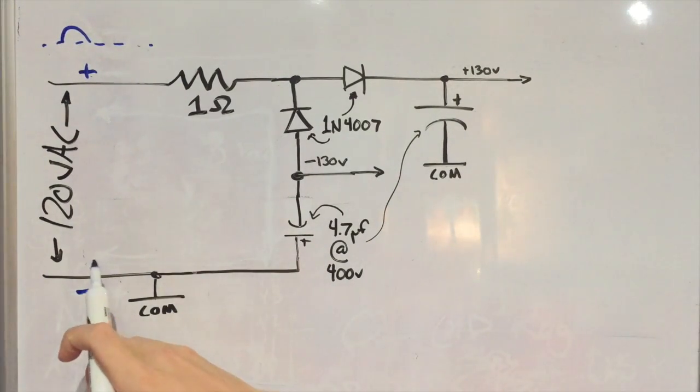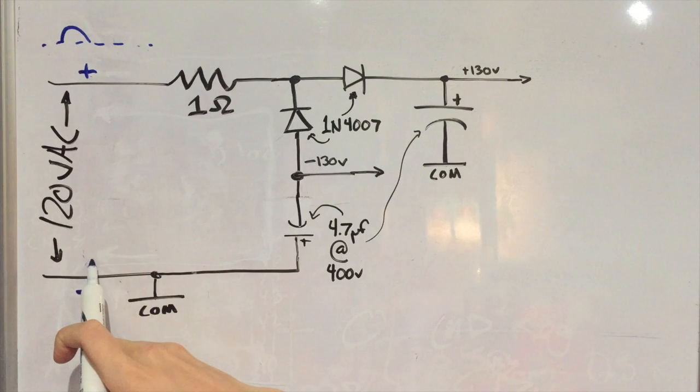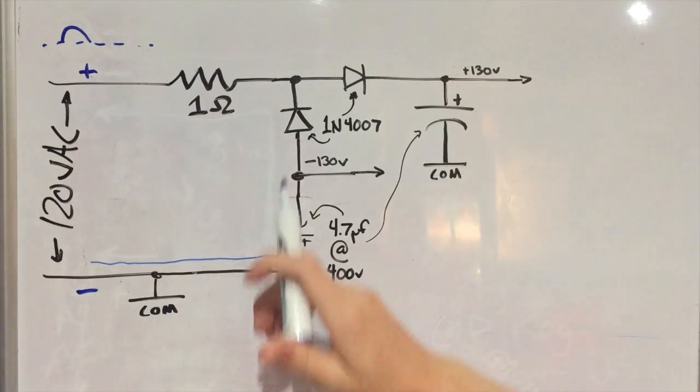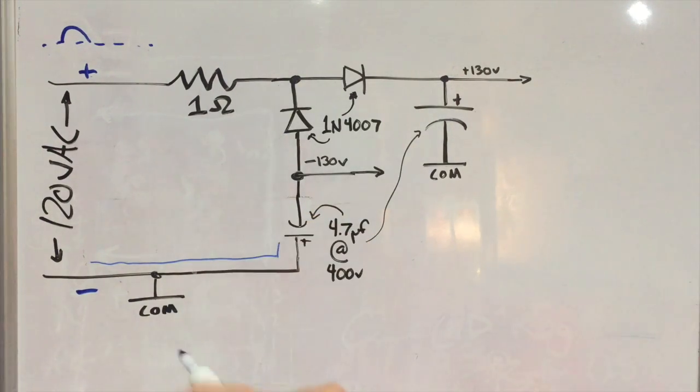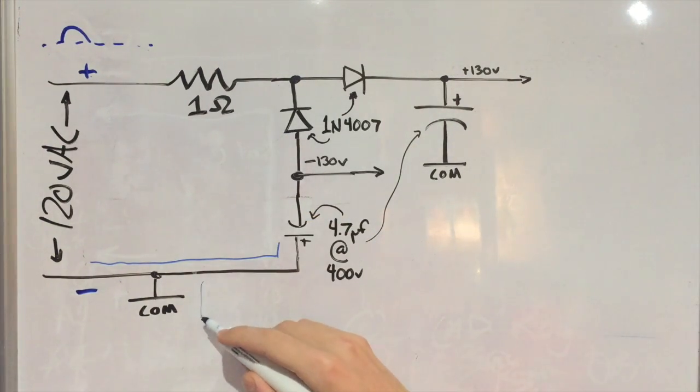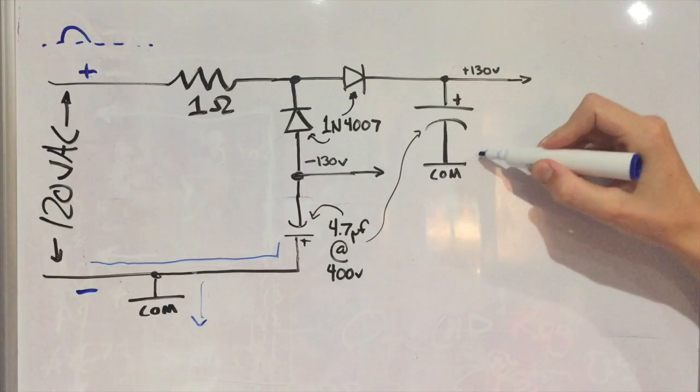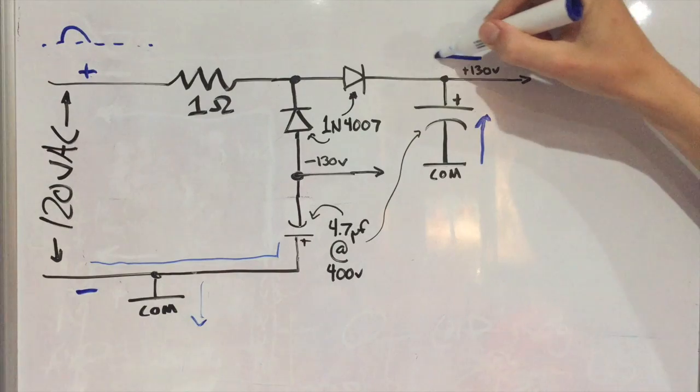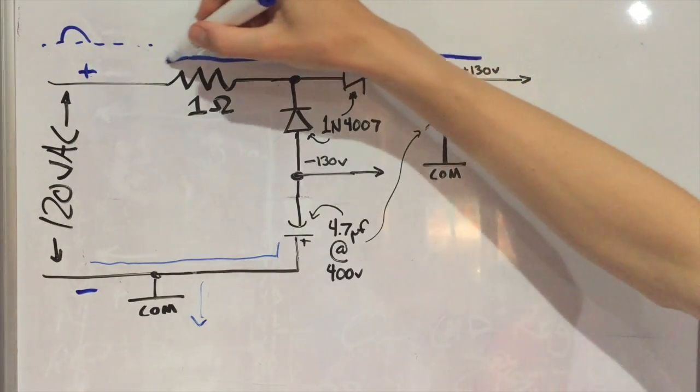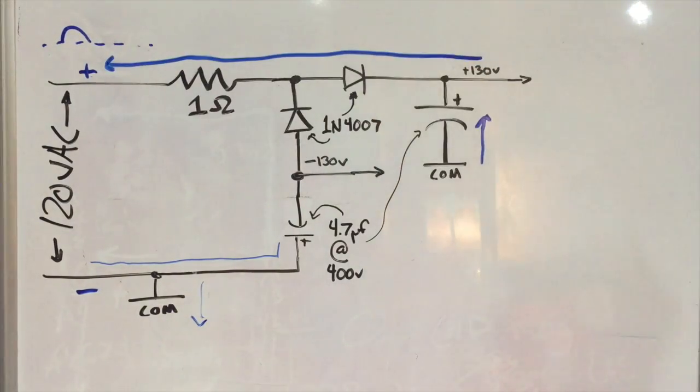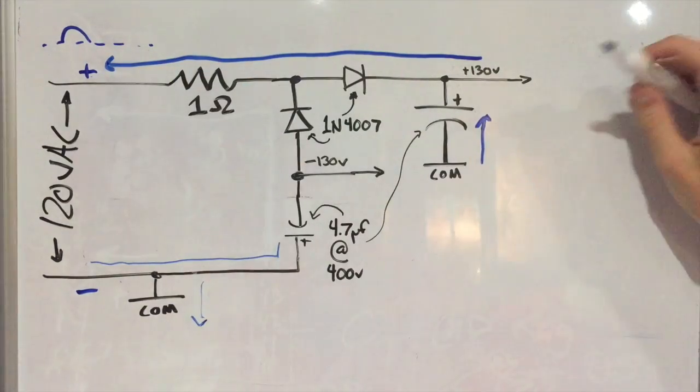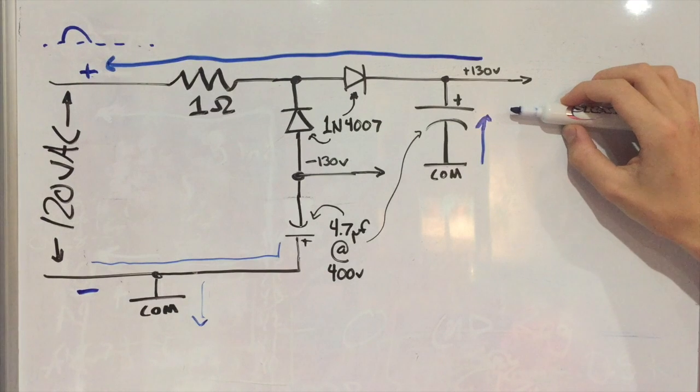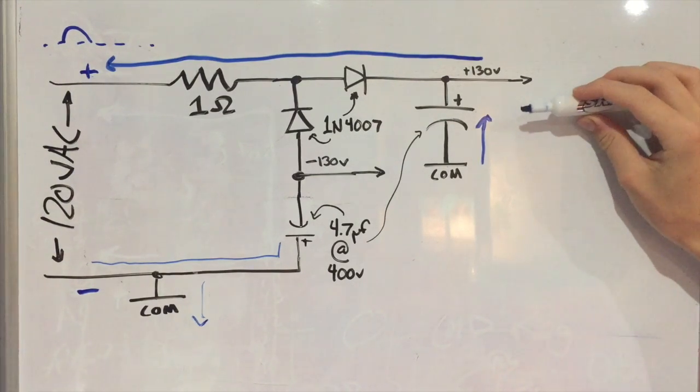So the electrons are going to want to come in this way, and they don't want to flow this way because of this diode. It will be reverse biased. So instead they come down this way through the common and back up into this capacitor, where then they return through this diode, through the resistor, and back. So that generates on the first half of the cycle 130 volts by charging up this capacitor to around 130 to 170 volts, and in my testing it seems to be about 130.